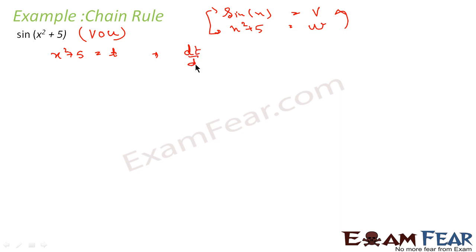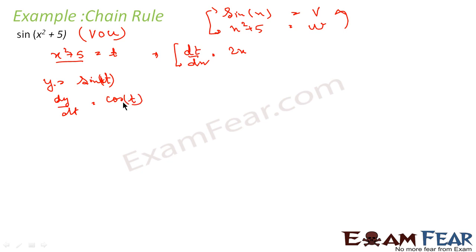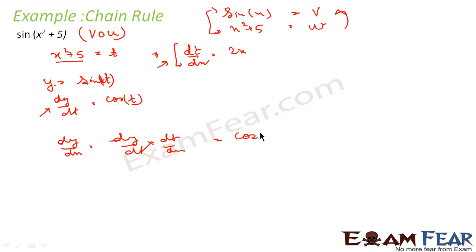I find dt by dx, which is 2x. Because if I assume x squared plus 5 as t, I get y as sine t. If my y is sine t, I can get dy by dt. So, my dy by dt is nothing but cos t. I have dy by dt and dt by dx, so I can get dy by dx. My dy by dx is dy by dt into dt by dx, which becomes cos t into 2x. And since t is x squared plus 5, this becomes cos of x squared plus 5 into 2x. And that is my answer.